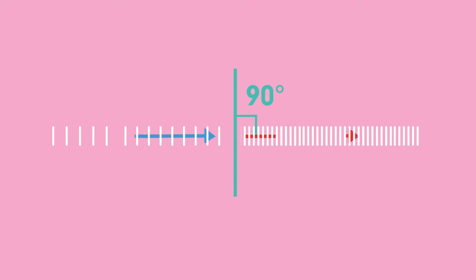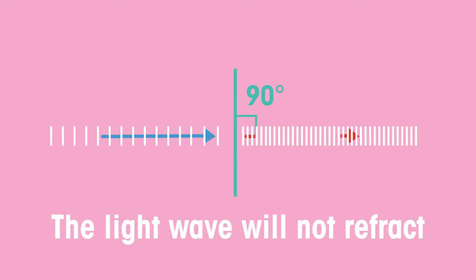There is one special case you need to know. Refraction doesn't happen if the waves cross the boundary at exactly 90 degrees. If this happens they carry straight on.